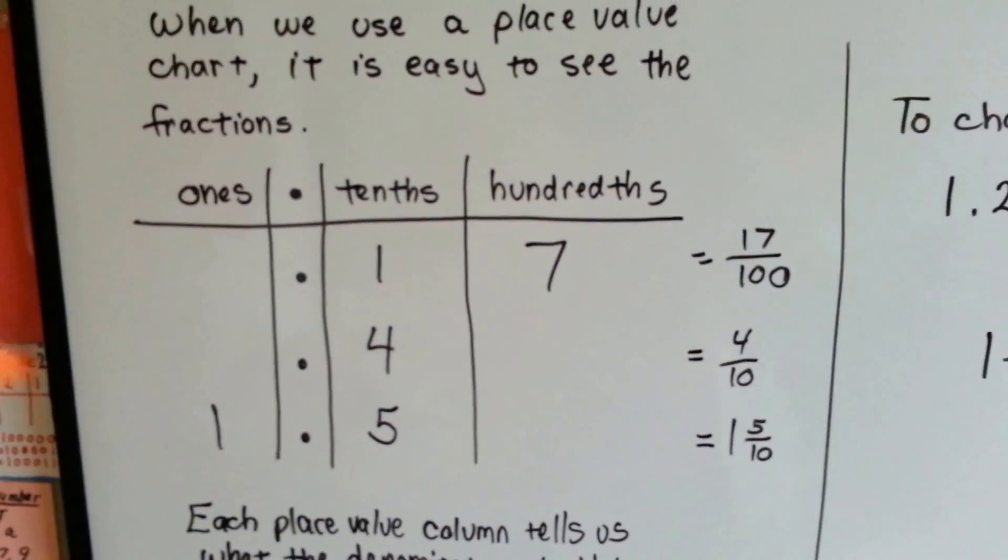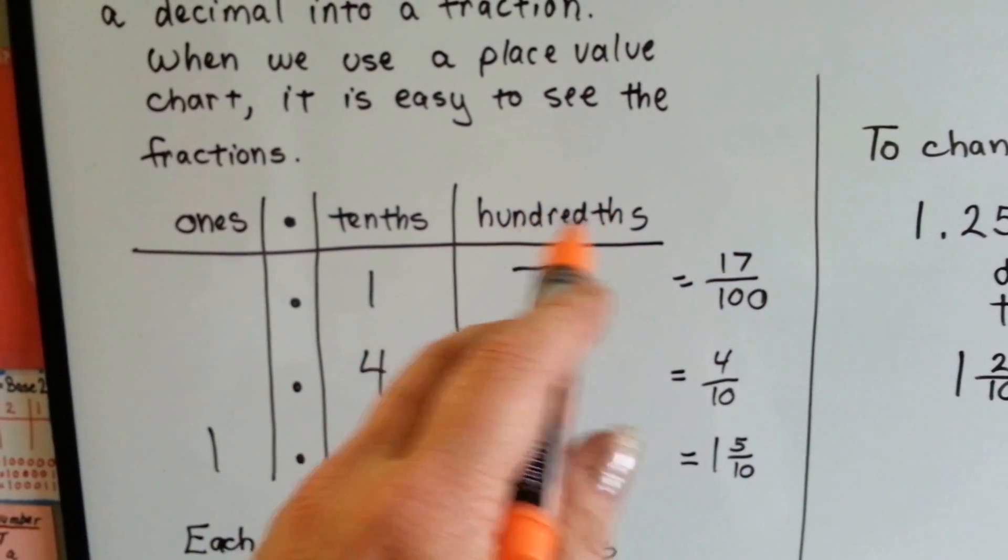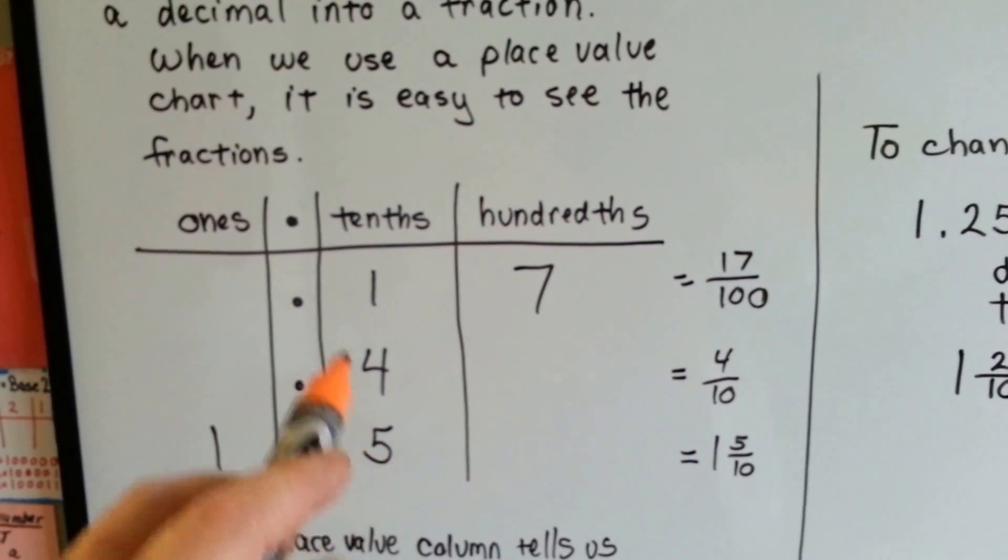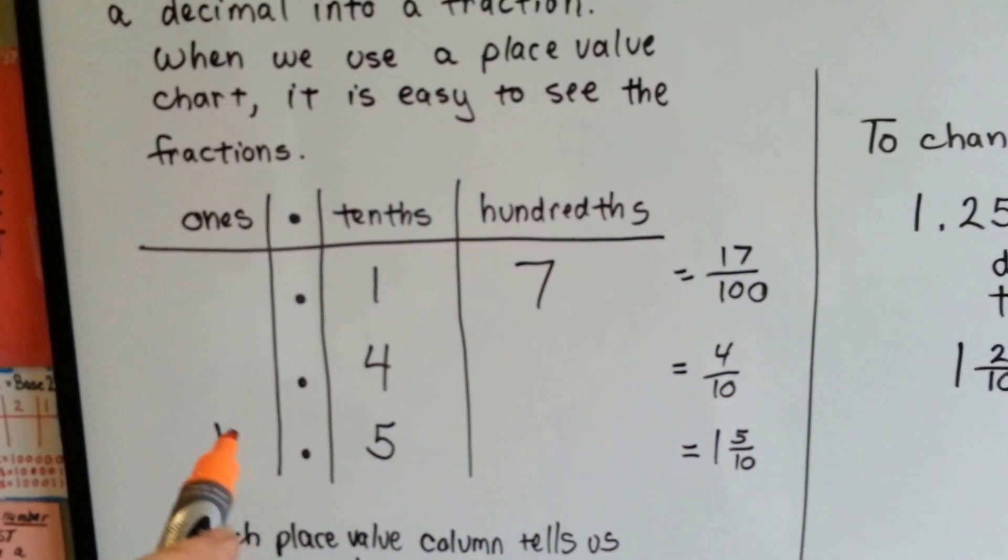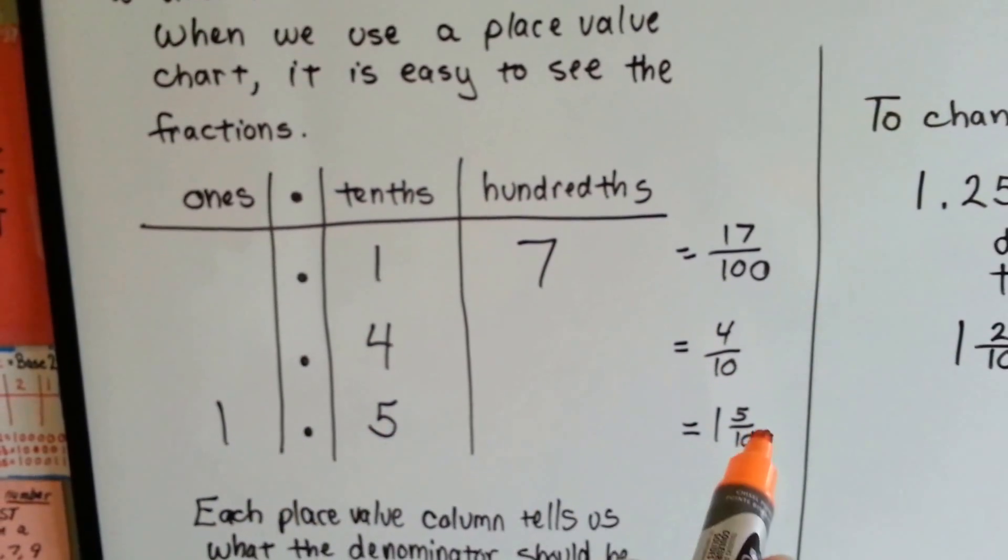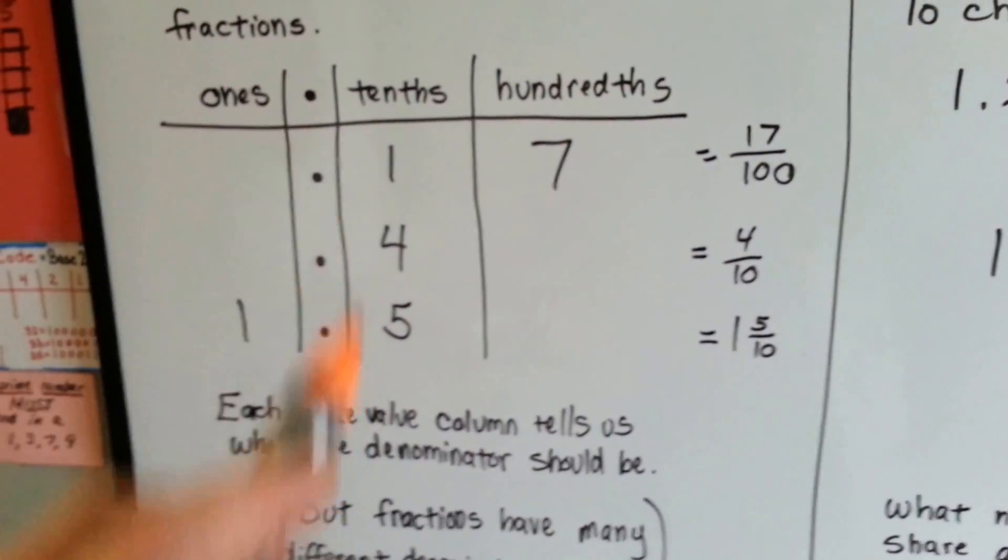A one and a seven, written like this in the place value chart, is seventeen hundredths. We can see the denominator is hundredths. We can see this is four tenths, and we can write it as four over ten, or that this is a one and five tenths. Each place value column tells us what the denominator should be.